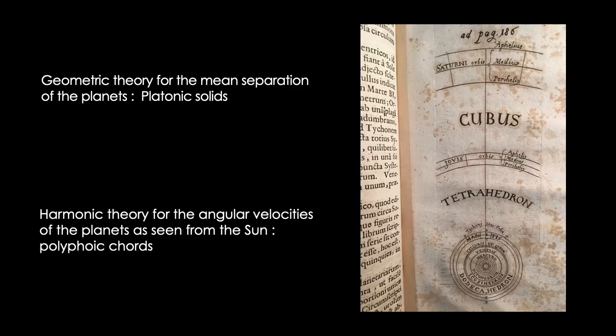His theory consisted of two parts. He had a geometric theory for what the mean separation of the planets was due to. In this case it was due to the stacking of three-dimensional platonic solids. Here for instance you see that the orbit of Jupiter and Saturn is separated by a cube.